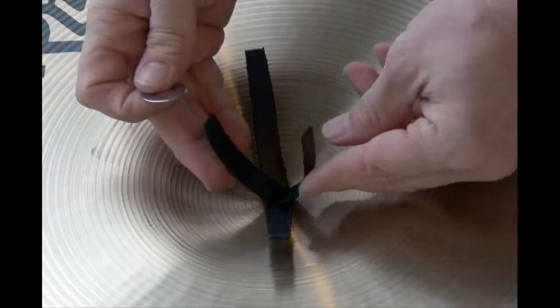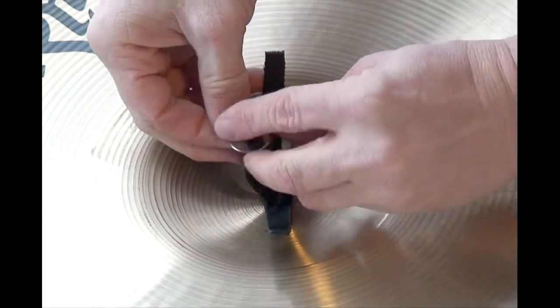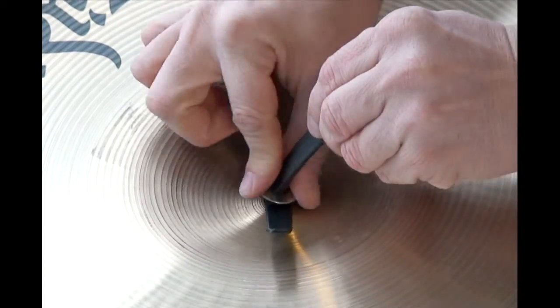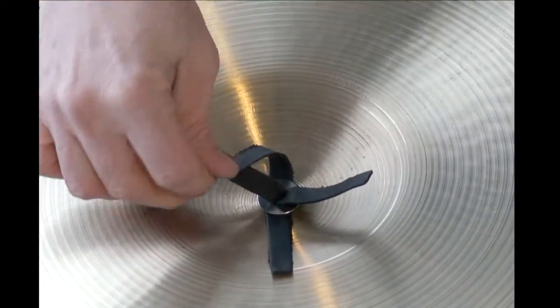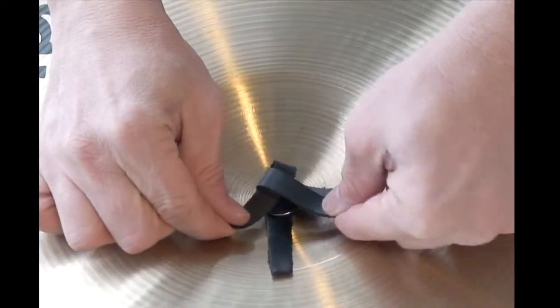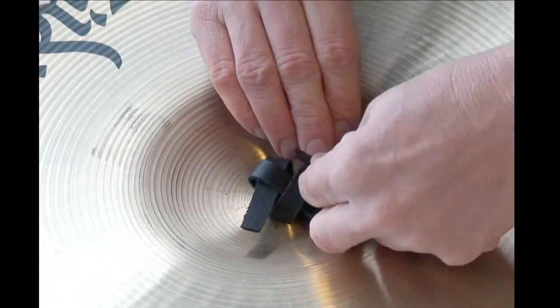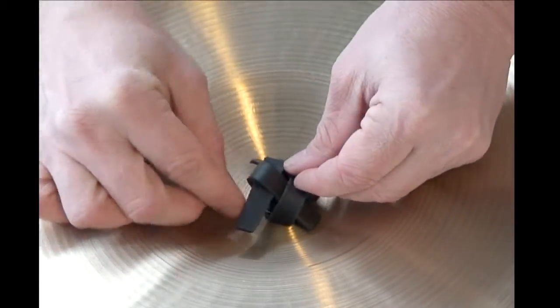If you have problems with the straps pulling through the cymbal, try placing a penny in the center of the square knot to help hold it in place. Or you can use my favorite technique of putting two strap ends through the center of a small washer, then tie the knot with the other two ends going around the washer.